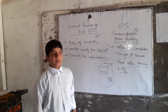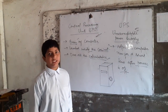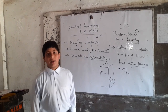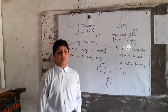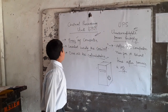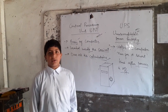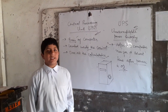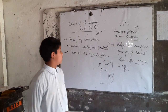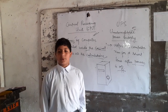CPU is the central processing unit. CPU is also called the brain of a computer. The CPU is located inside the cabinet. It does all the calculations in the computer system.